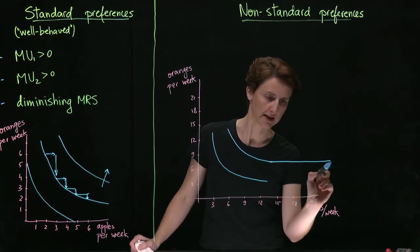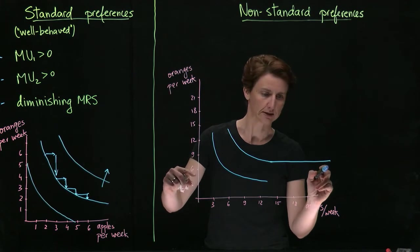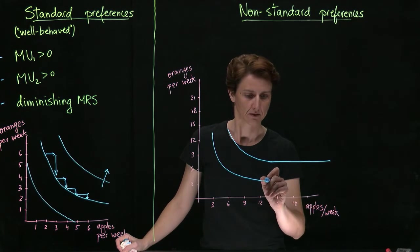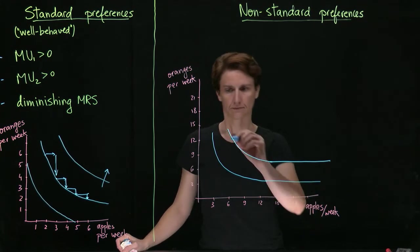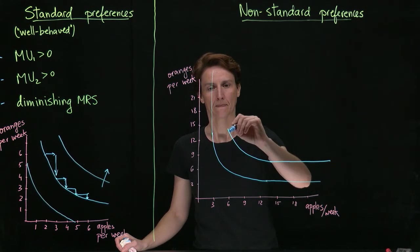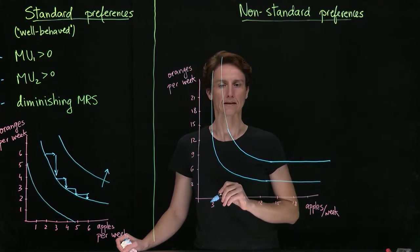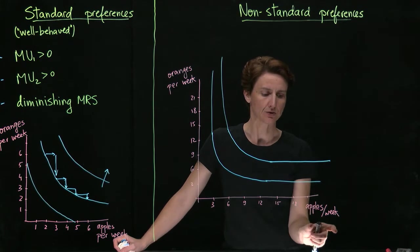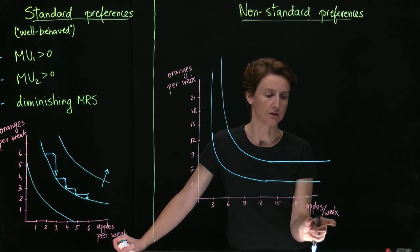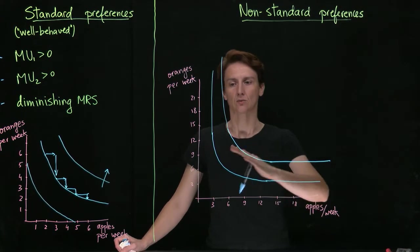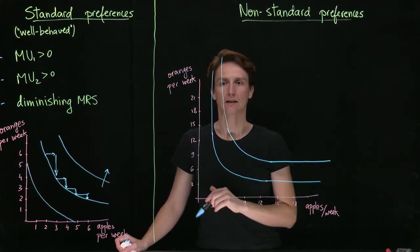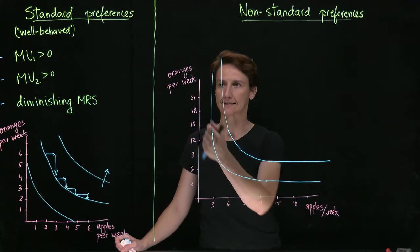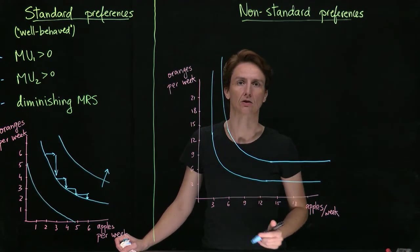We can continue to add apples without subtracting oranges and still the person will have the same utility value. So whenever the indifference curve is perfectly flat, that means the consumer doesn't place any value on the good on the horizontal axis. Whenever the indifference curve is perfectly vertical, that means the consumer only values the good on the horizontal axis and places zero value on the good on the vertical axis.